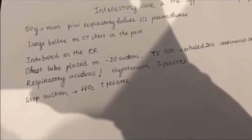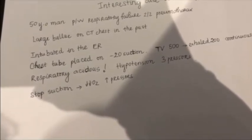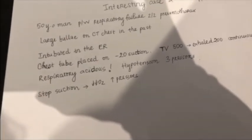Two months ago, I came to the ICU with a notion that there's a person that is about to die, and this is him. This is a 50-year-old man, he had a history of respiratory failure secondary to pneumothorax. The pneumothorax was super large. He was known to have large bullae on the CT chest in the past, bilaterally, actually multiple bullae on the CT chest in the past.